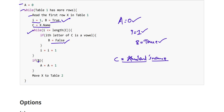Inside the loop, if the i-th letter of 'c' is a vowel, then 'b' is updated to false immediately. That means if a student's name has even one vowel, 'b' becomes false. 'b' remains true only if the student's name contains no vowels at all. Only if 'b' is true do we increment 'a': the step 'a = a + 1' executes only when 'b' is true.